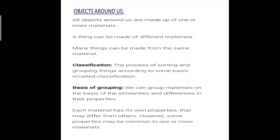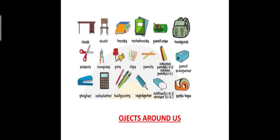When we see any object, we generally touch it and feel it — whether it is heavy or light, whether it can sink or float on the surface of water, or whether light can pass through it or not. On the basis of these properties, materials are classified into two categories: physical properties and chemical properties.